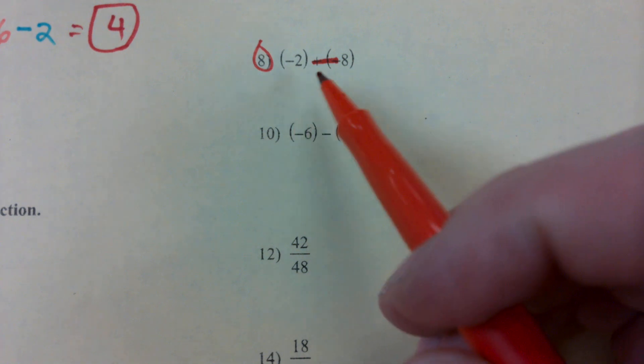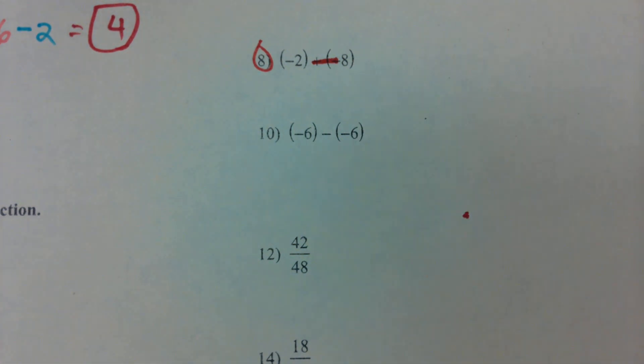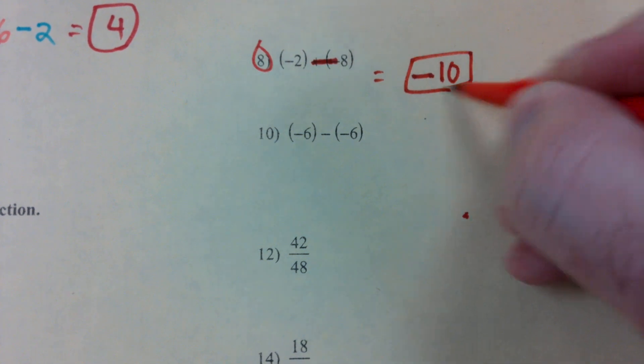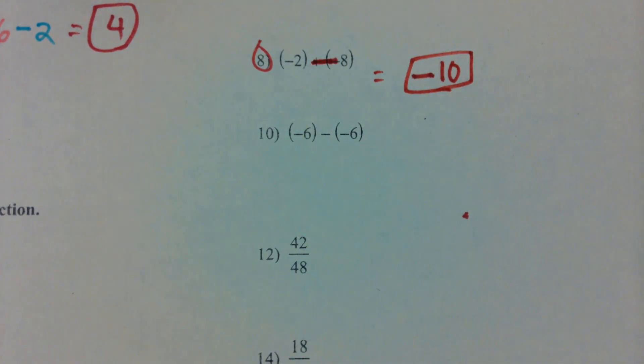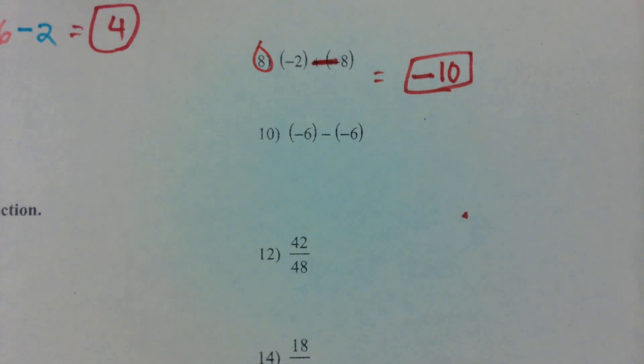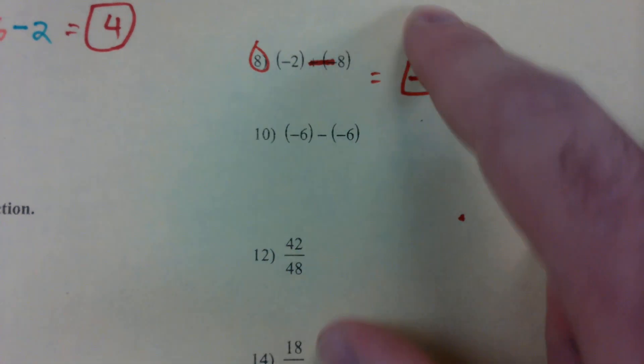So now we have negative two minus eight. Again, one way we can think about this is you're spending two dollars and then you spend eight more dollars for a total of ten dollars that you spent. So we get minus ten. Now, some of you may have gotten something like six or negative six. Totally fine, as long as you understand how we got negative ten. If we already have a negative number and then we're subtracting more from it, we're getting further down the negative number line. You can always refer to this number line up here on top of the board on the left if you need help.